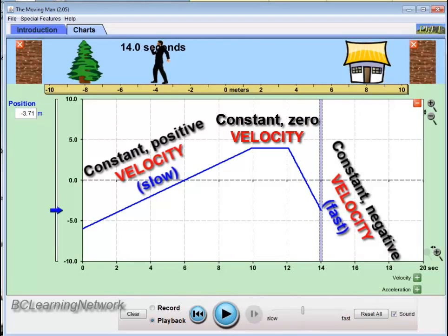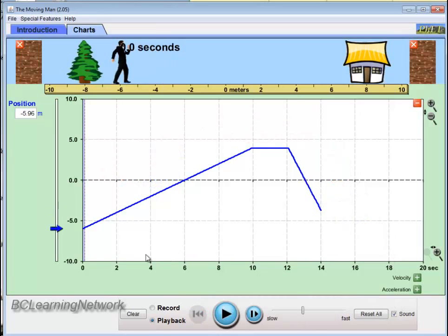Now, what does our velocity time graph look like? Now, we've already described what the velocity is doing in those three regions: constant positive, 0, and constant negative. So we should have some sort of idea what the shape of the graph will look like. But we can also get some numbers. The slope literally is the velocity.